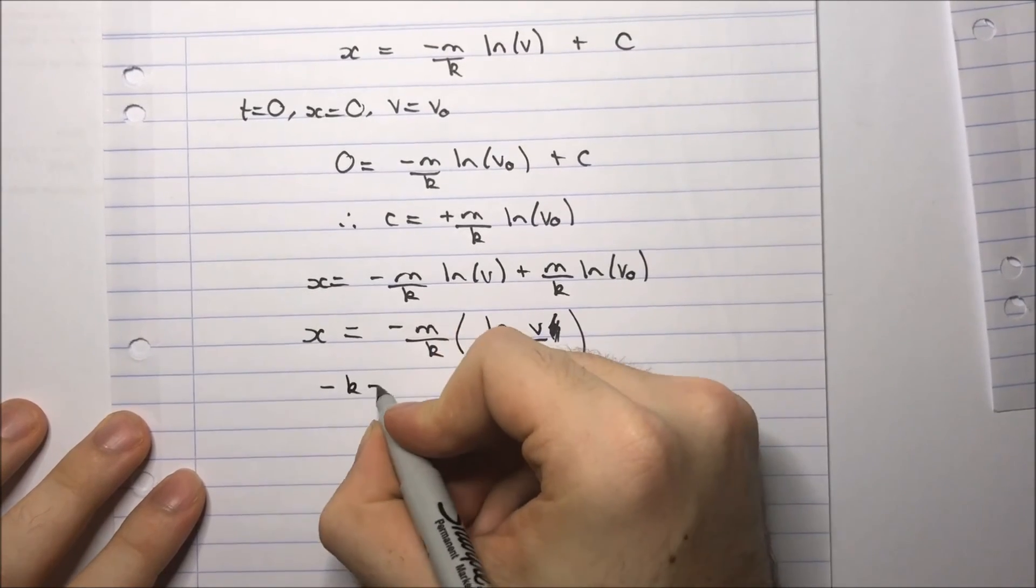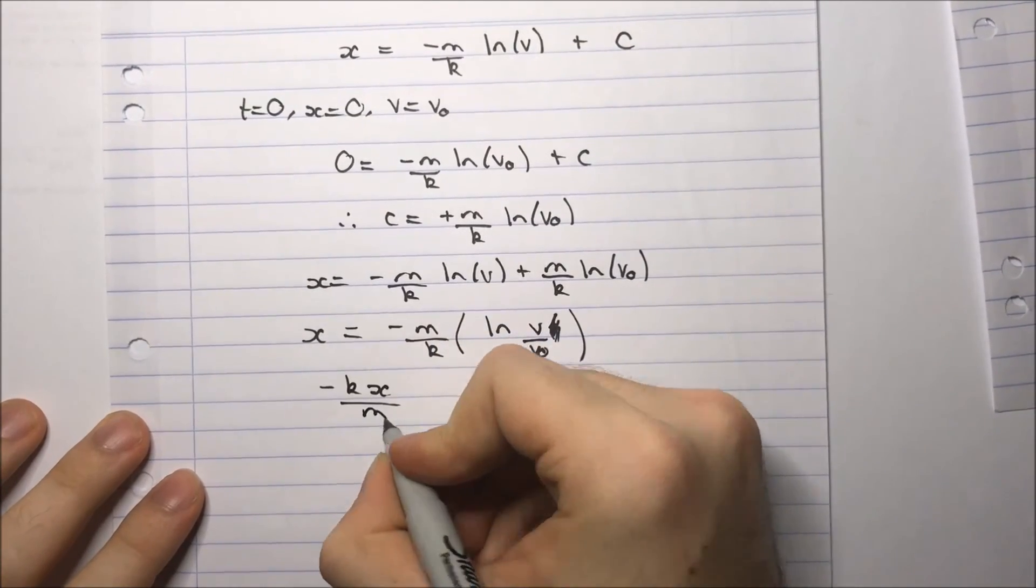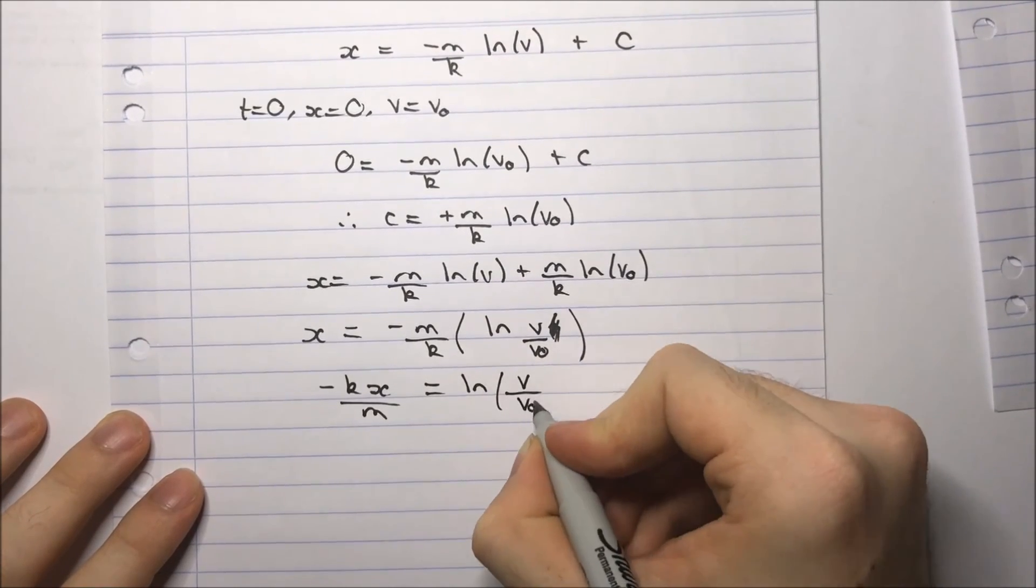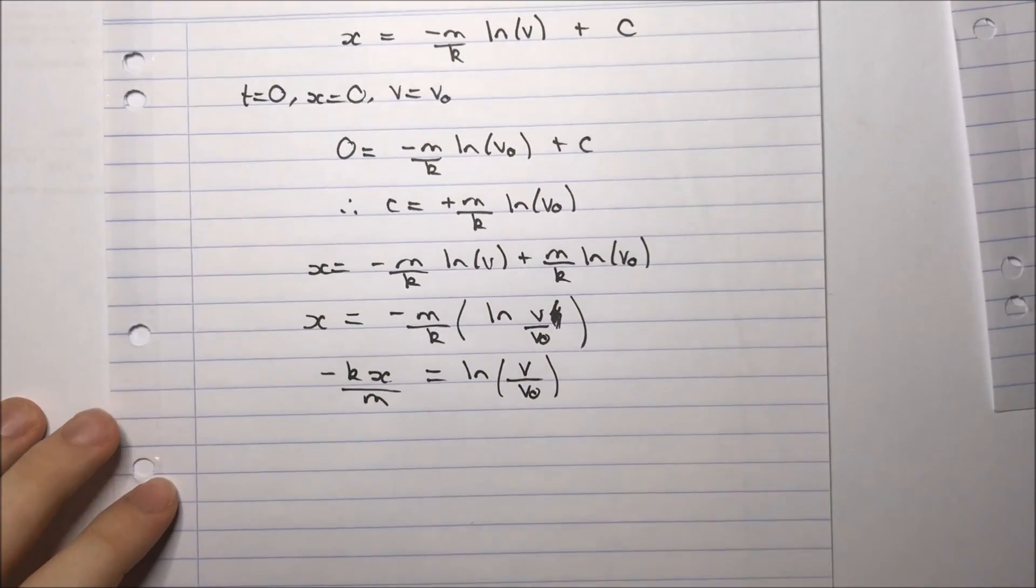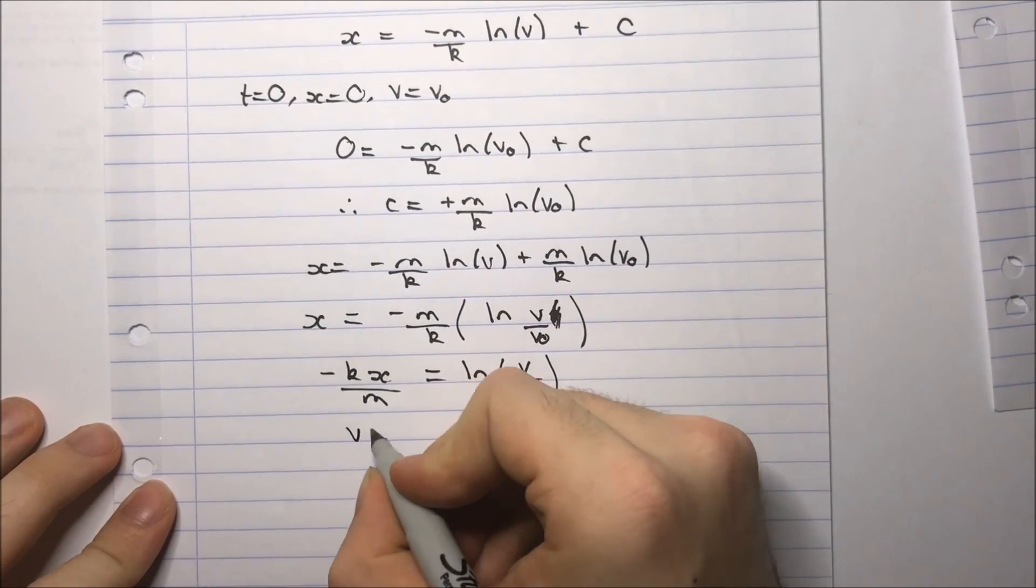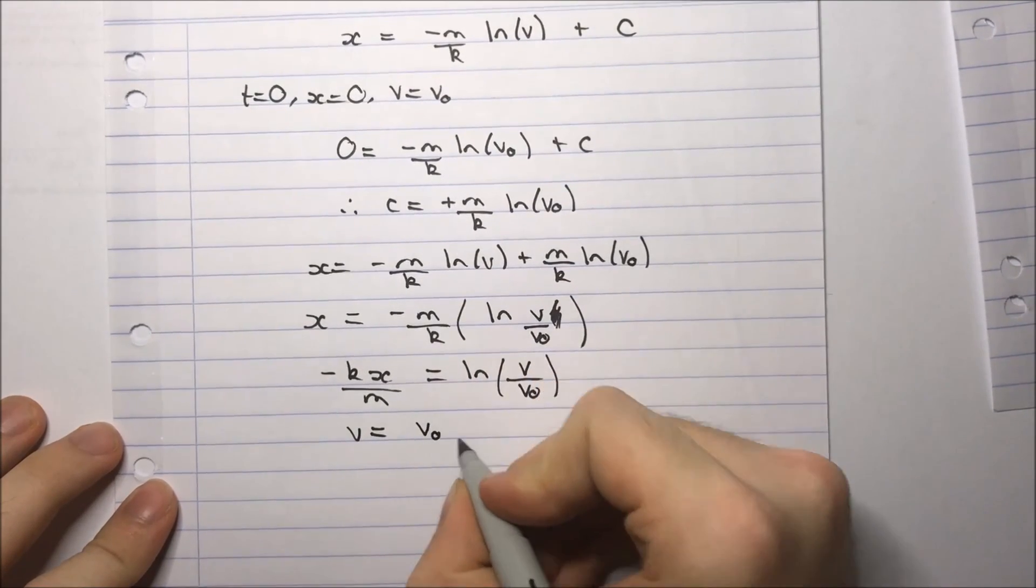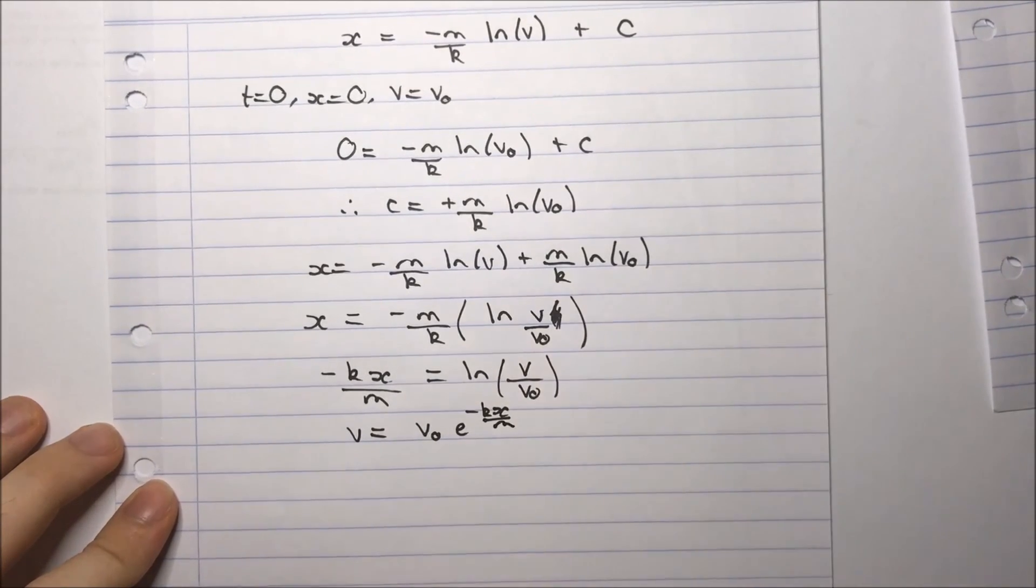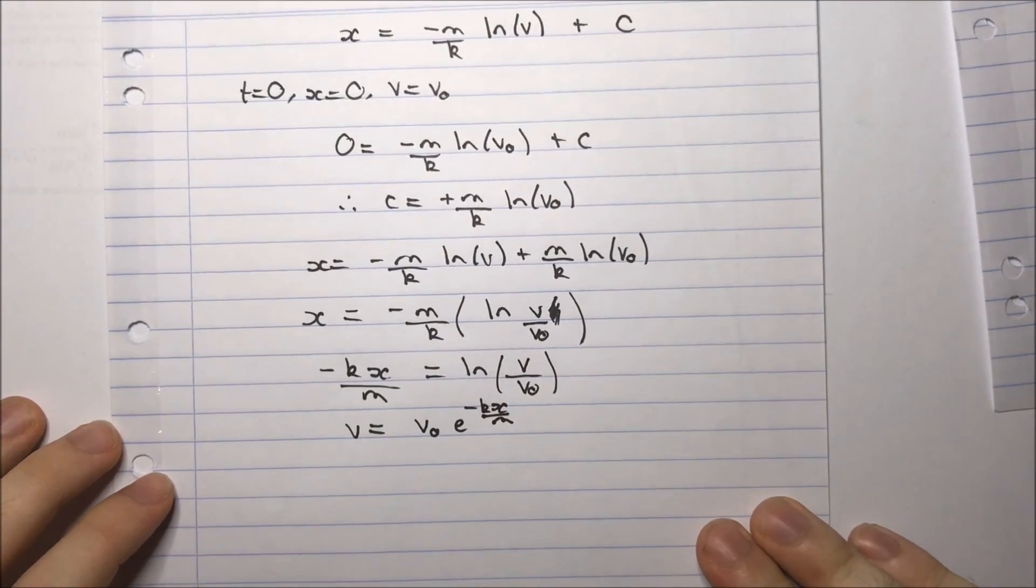So this gives us minus kx/m equals log v/v0. Then if I exponentiate both sides and multiply by v0, I'll be left with v equals v0 e to the negative kx/m. And that is your final answer.